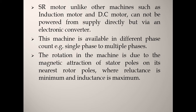This machine is available in different phase counts — for example, single phase, two phase, three phase, four phase, and so on. If we have four stator poles it is called a two-pole machine; if we have six poles on the stator it is called a three-phase machine. The rotation in the machine is due to the magnetic attraction of the stator poles and its nearest rotor poles, where the reluctance will be minimum.